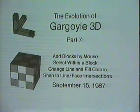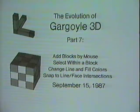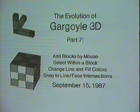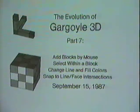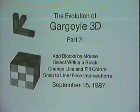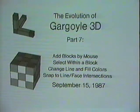This is the evolution of Gargoyle 3D Part 7. Four new features have been added: you can now add blocks to the scene by stretching them in with the mouse, you can select all of the objects that fall within a block-shaped bounding volume, you can change line and fill colors of shapes, and you can snap the skitter to the intersection of alignment lines with block faces.